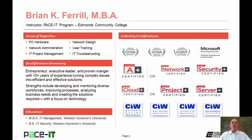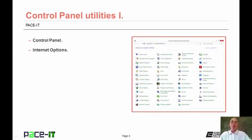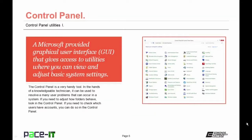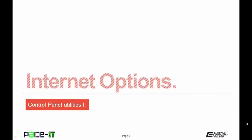I'm Brian Farrell, and welcome to Pace IT's session on Control Panel Utilities, Part 1. Today we're going to discuss what the control panel is and then discuss the Internet Options applet. The control panel is a user interface that gives access to applets — small programs — that the user can use to adjust basic system settings. It can be a very handy tool for a knowledgeable technician. The Internet Options applet is used to control the default behavior of Internet Explorer. Once you open it, you'll find seven tabs.